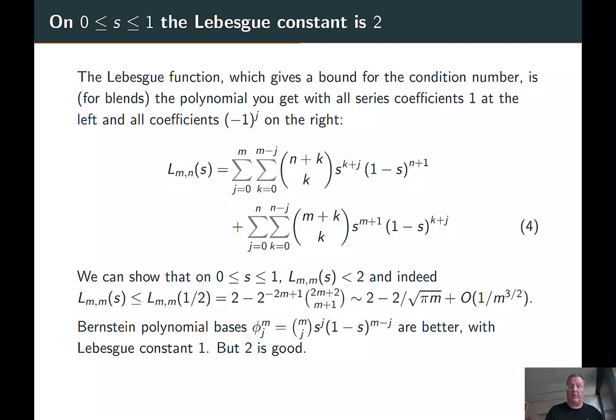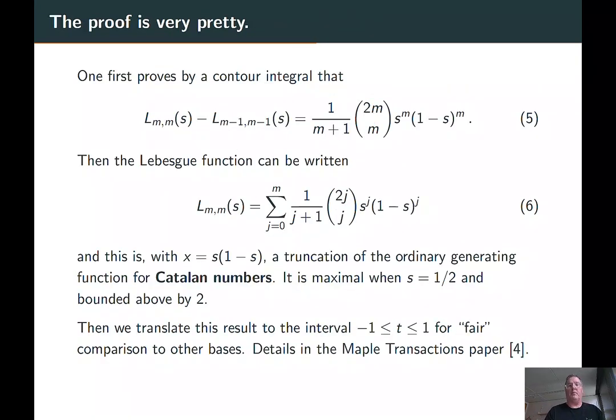And I do want to tell you the details of the proof because the proof is really pretty. You first look at the difference between the Mth Lebesgue function and the (M minus 1)st Lebesgue function. And you compute a few of those things, and you look at these numbers that come out in front of the thing. And they're all of the form s^M times (1 minus s)^M multiplied by a constant. And you look at those first three constants and you type them into the online encyclopedia of integer sequences and it says, hey, those are Catalan numbers. And you go, oh, maybe I can prove that. And you use a contour integral and you prove it. And then if the differences are known, then you can write L_MM(s) as a sum. And that's a truncation of the ordinary generating function for Catalan numbers, and it tells you everything you want to know.